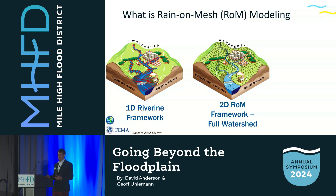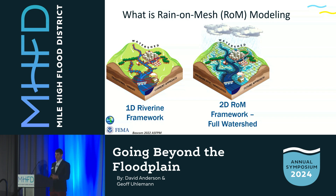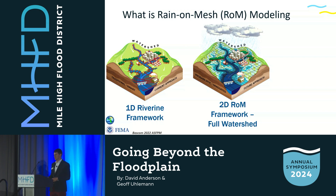In a 2D Rain-on-Mesh framework, there's rain falling across the entire watershed and you can see where every single raindrop is being routed. Each one of those black polygons is a cell, and along each cell face is essentially a cross section. There's a unique stage-storage curve developed for each cell to give much higher resolution to the entire model — essentially a much higher density of cross sections throughout — so you get a lot more data.